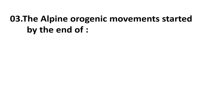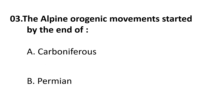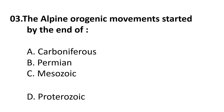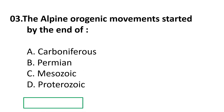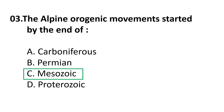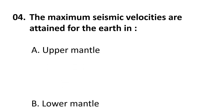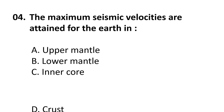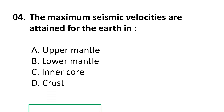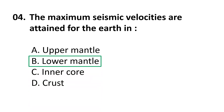Question 3: The alpine orogenic movement started by the end of — choices are: A) Carboniferous, B) Permian, C) Mesozoic. The correct answer is C) Mesozoic. Question 4: The maximum seismic velocities are attained for the earth in — choices are: A) Upper mantle, B) Lower mantle, C) Inner core, D) Crust. The correct answer is B) Lower mantle.